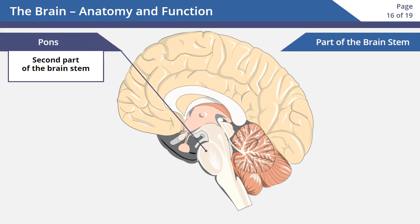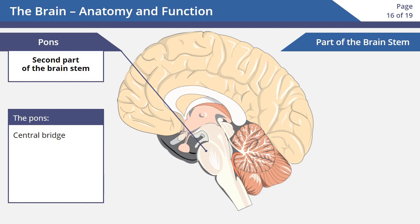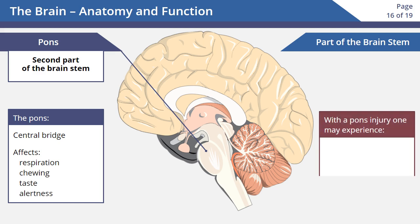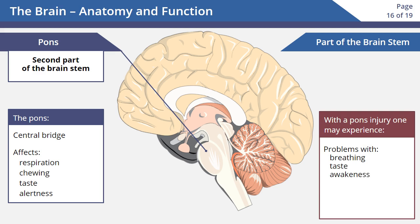The pons is the second part of the brain stem and is the central bridge between the descending tracks from the midbrain to the lower centers, and ascending tracks from the medulla and the spinal cord. It affects respiration, chewing, taste, and alertness. Someone with problems in this part of the brain may experience problems with breathing, taste, and wakefulness, or may be in a semi-coma.